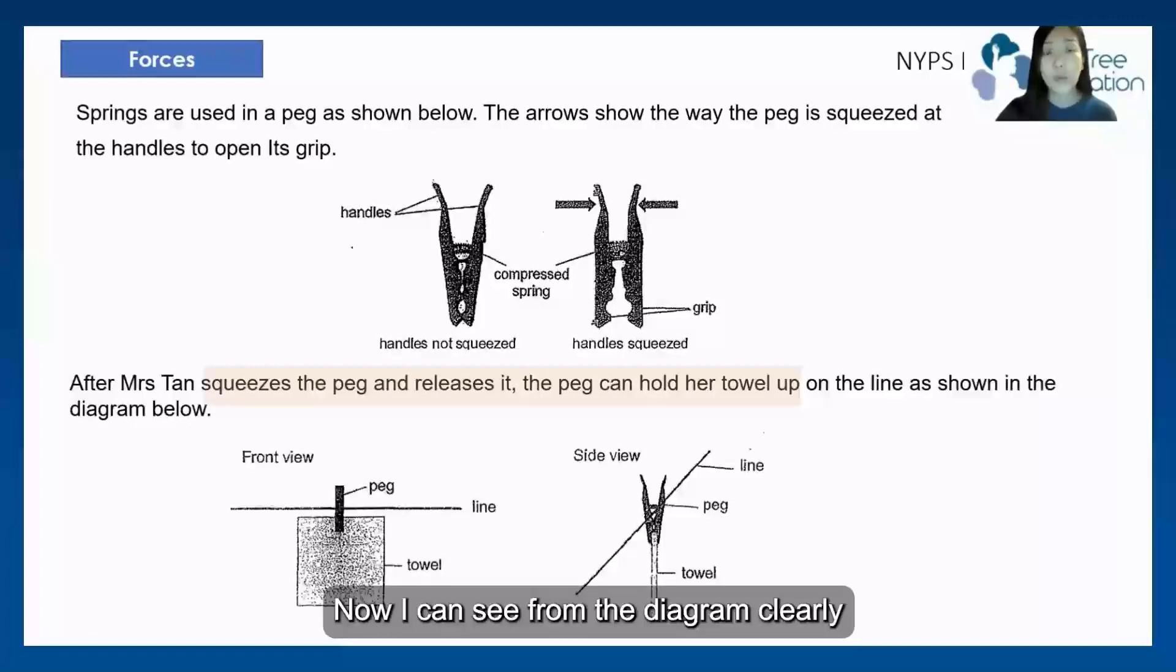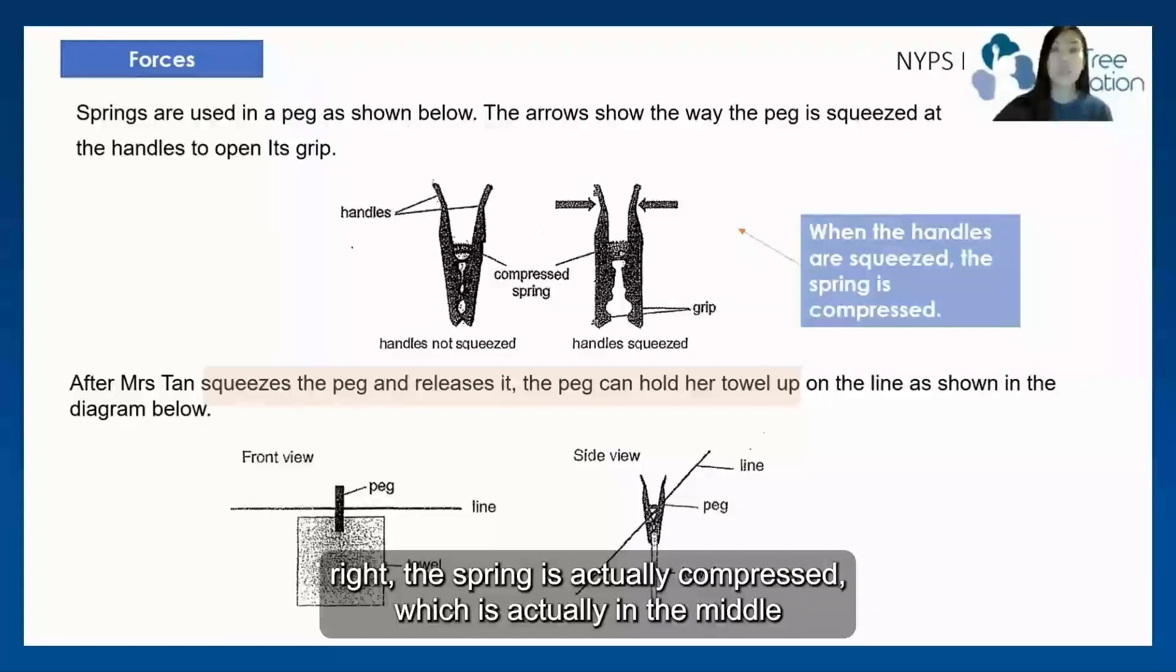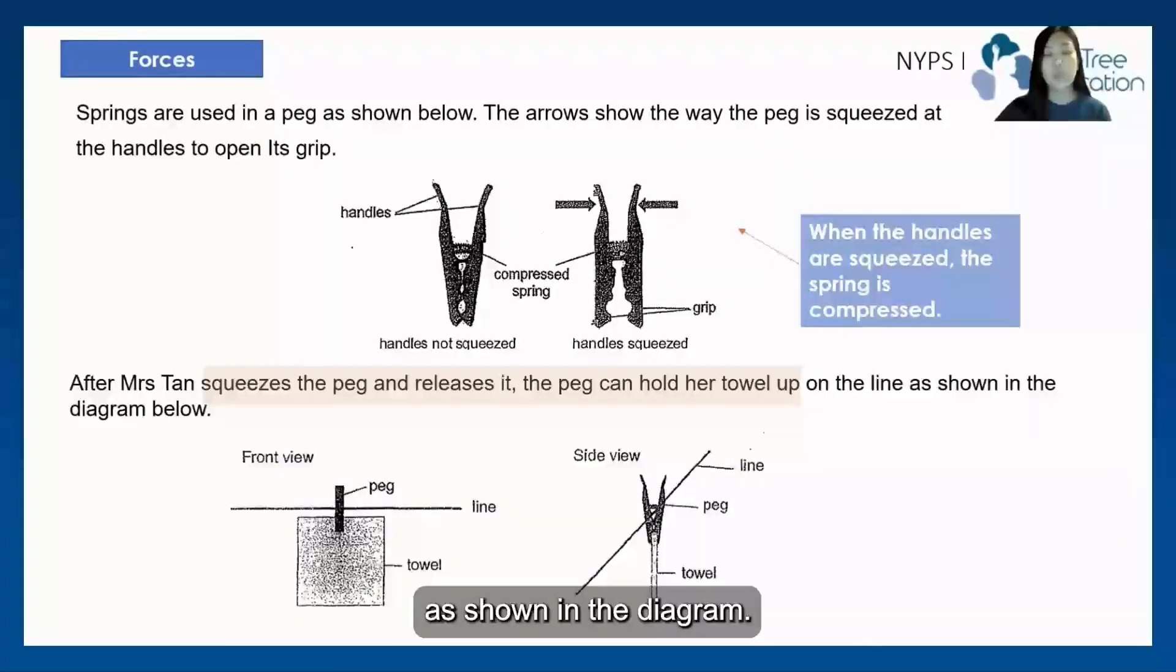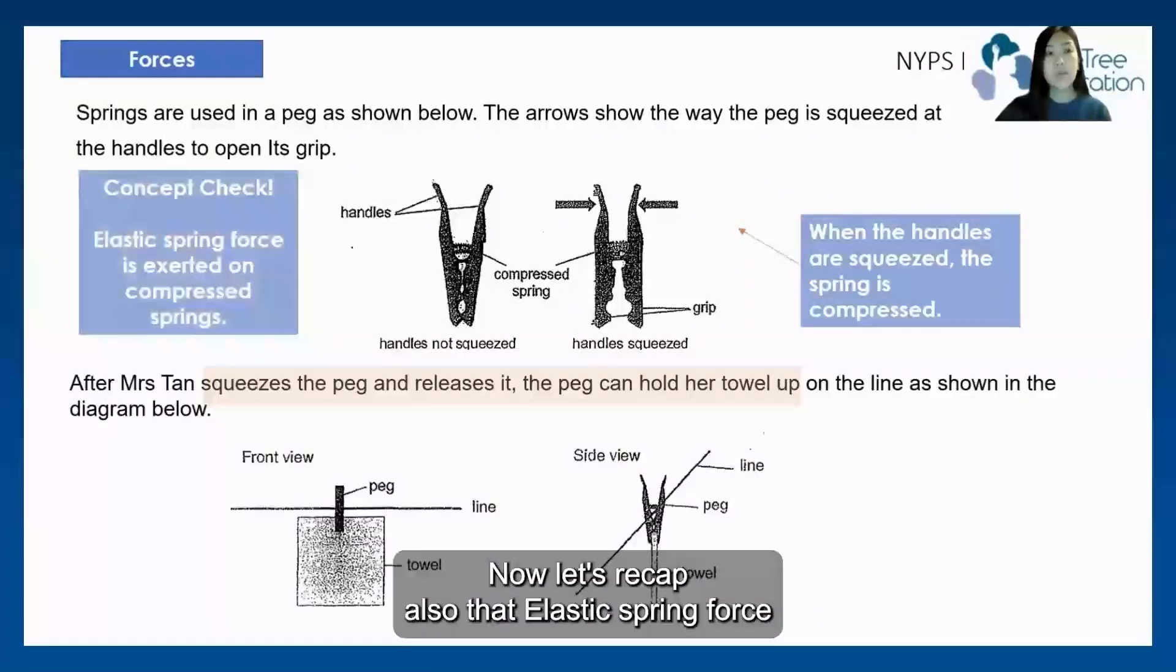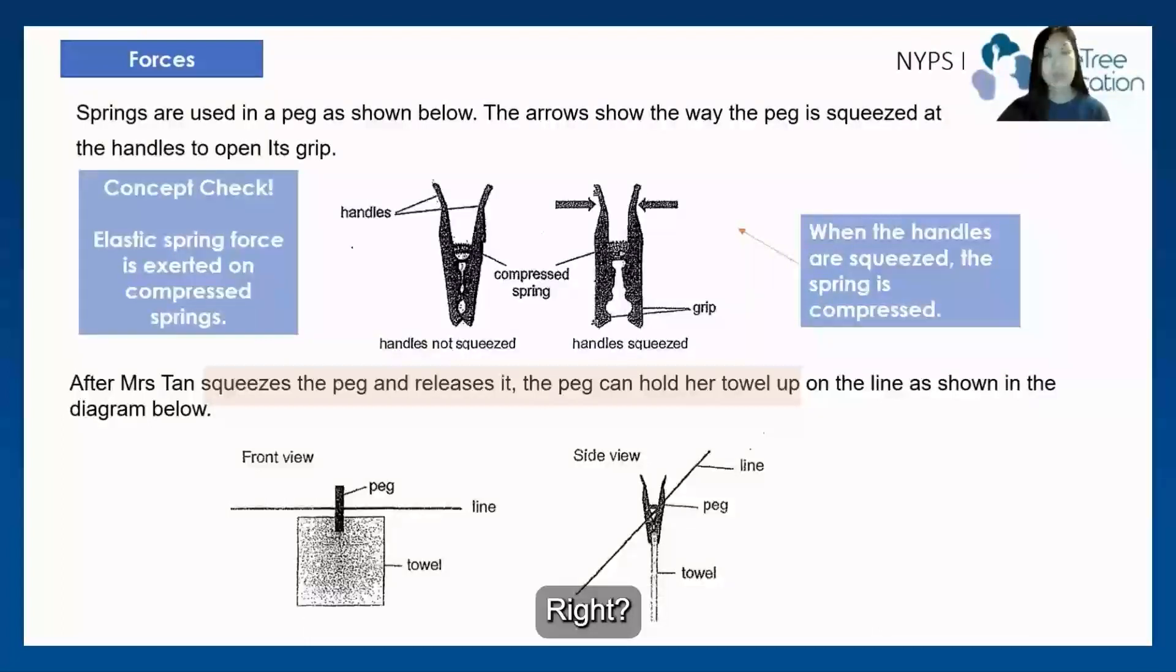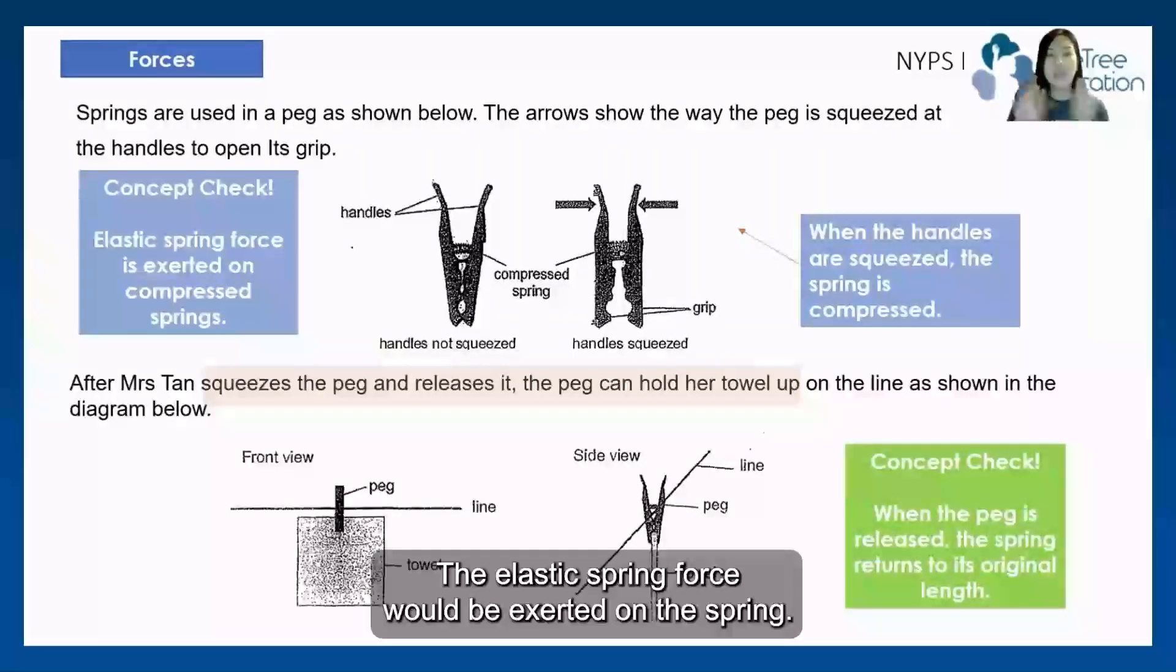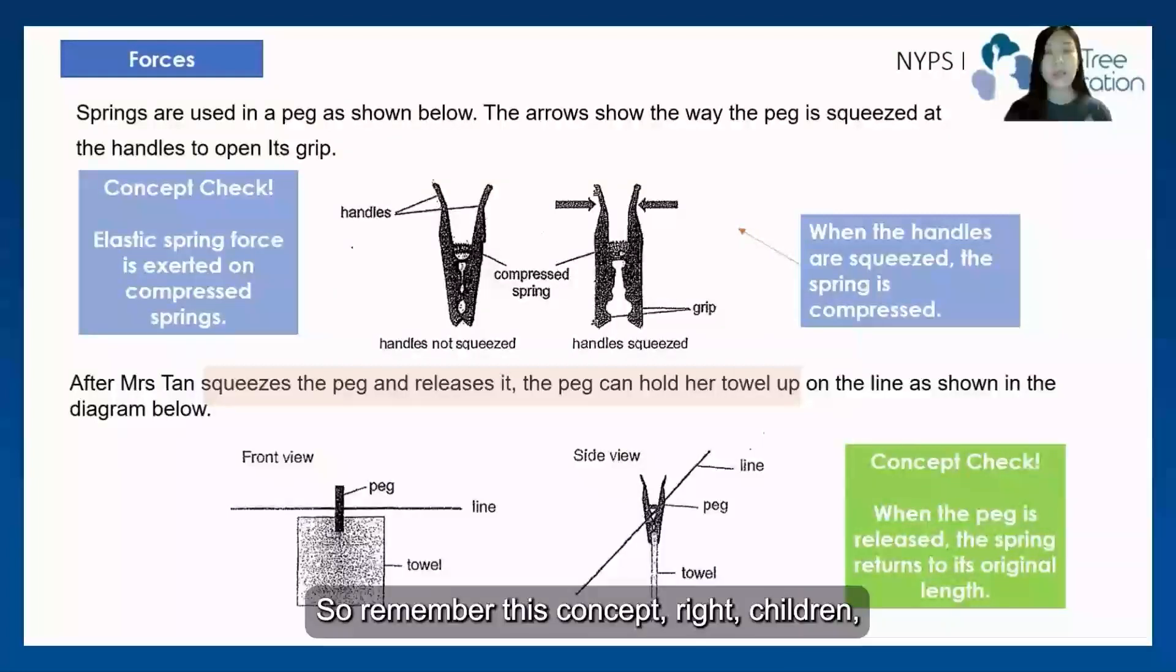Now, I can see from the diagram clearly that there is actually a compressed spring. And when the handles are squeezed, the spring is actually compressed, which is actually in the middle as shown in the diagram. Now, let's recap also that elastic spring force is actually exerted on compressed spring. Now, when the spring actually returns to its original length, the elastic spring force will be exerted on the spring. So remember this concept, children.